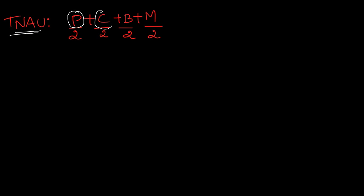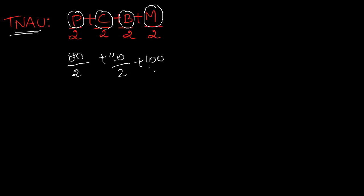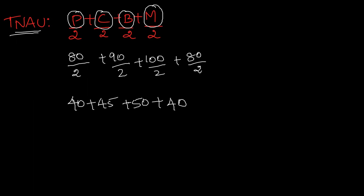Next, TNAU, that is agriculture. For agriculture: physics mark divided by 2, chemistry mark divided by 2, biology divided by 2, and max mark divided by 2. For example, physics 80 divided by 2 is 40, chemistry 90 divided by 2 is 45, biology 100 divided by 2 is 50, max mark 80 divided by 2 is 40. Total is 175. Agriculture cutoff is out of 200.